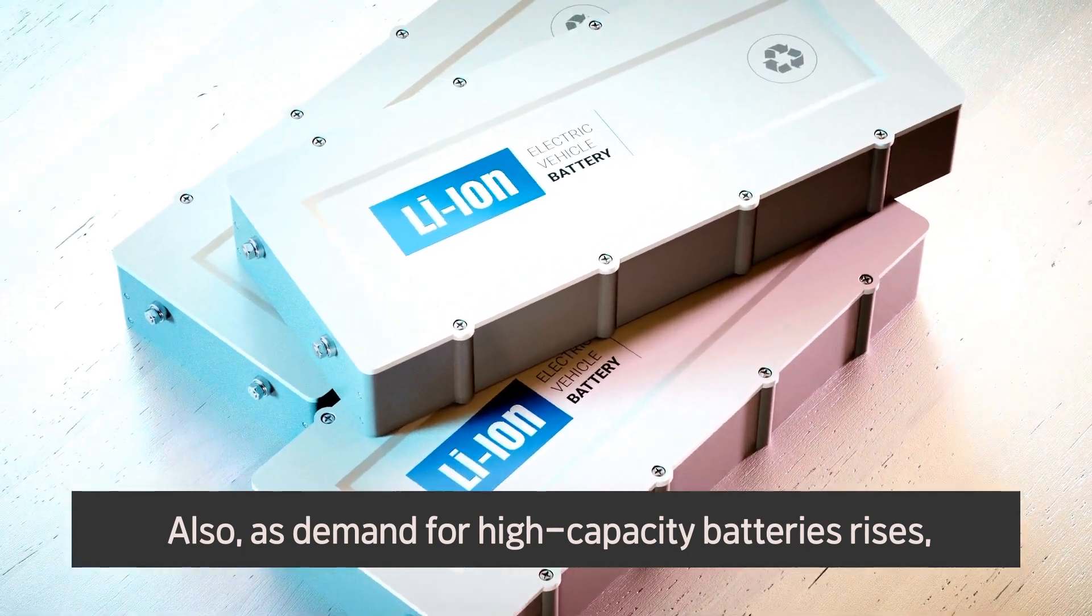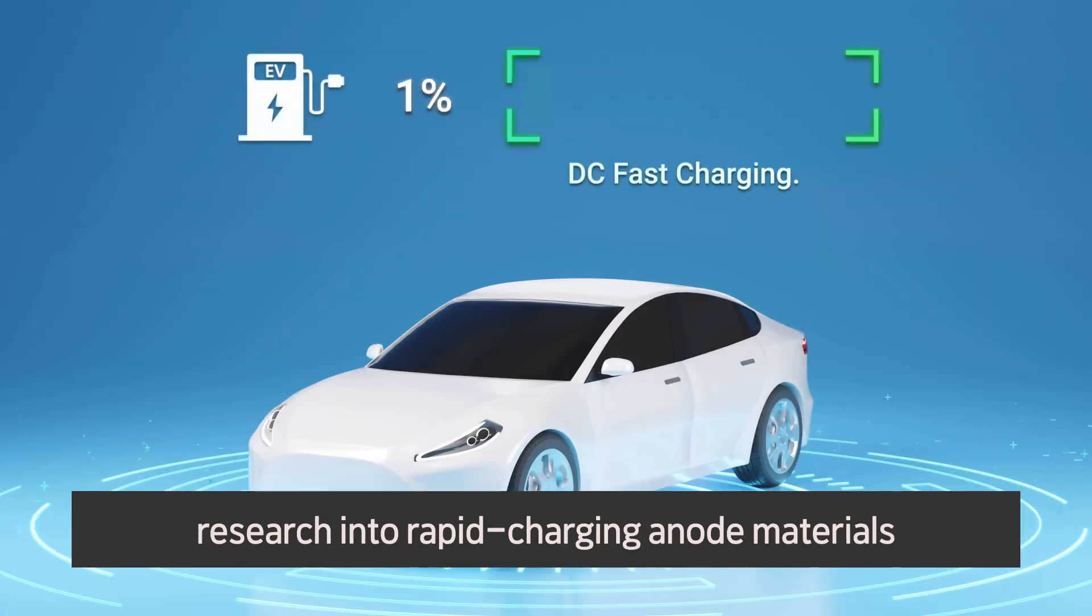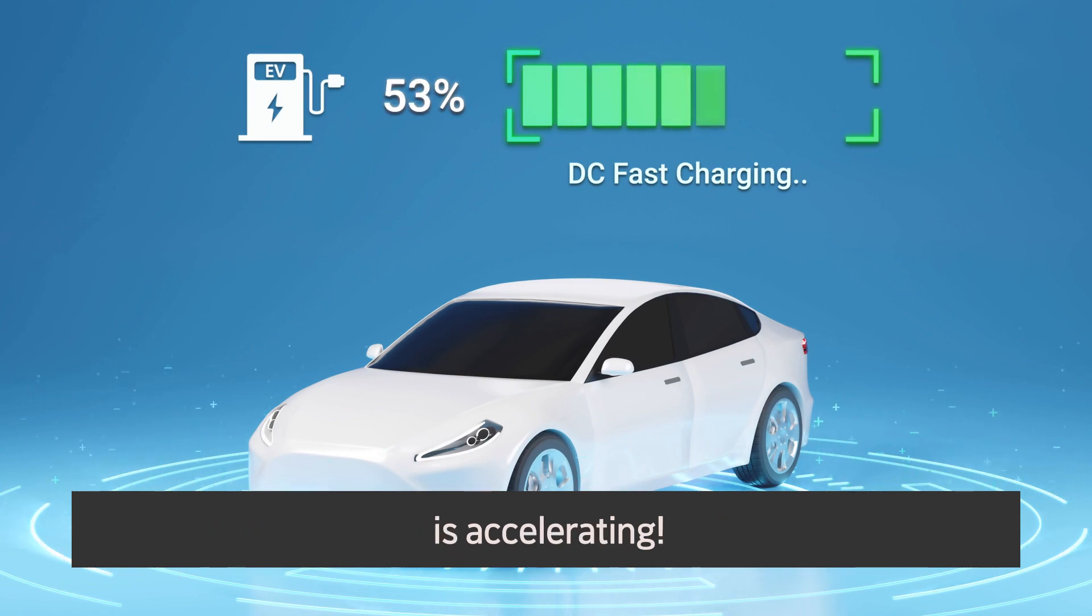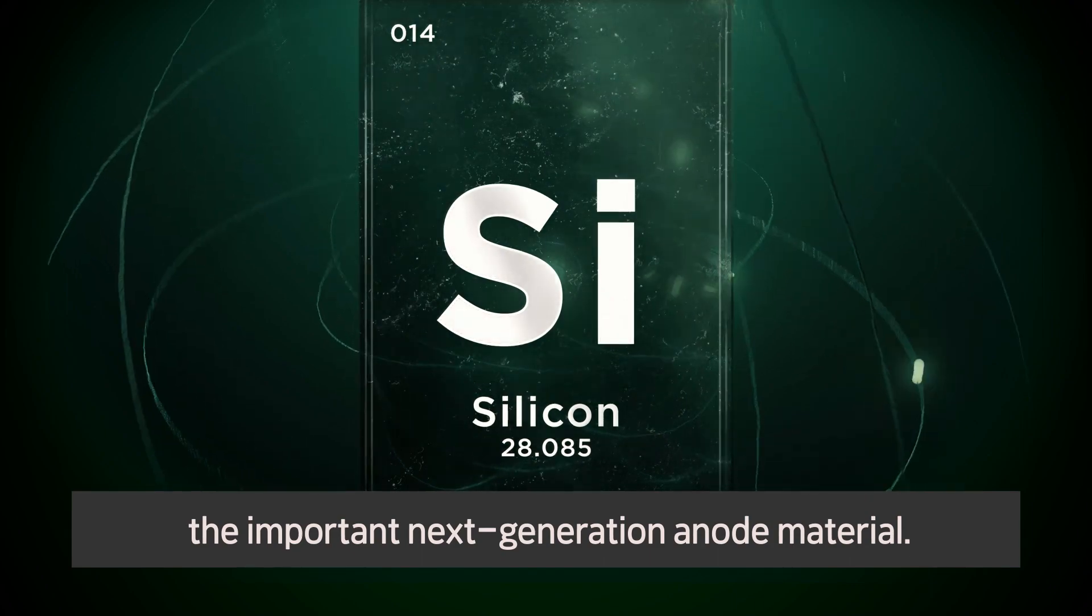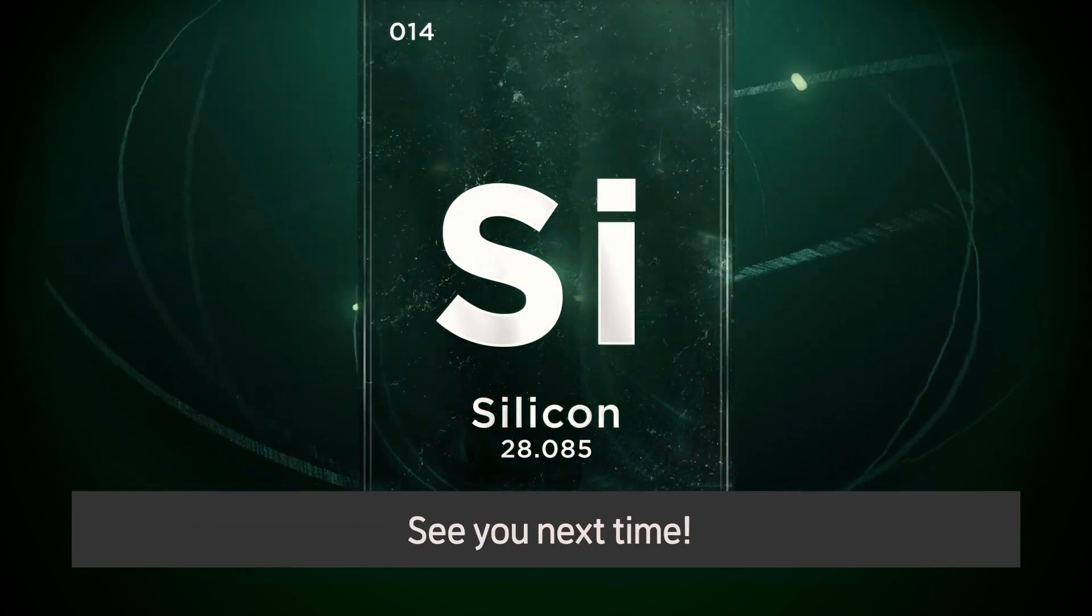Also, as demand for high-capacity batteries rises, research into rapid charging anode materials is accelerating. In our next episode, we'll look at silicon, the important next generation anode material. See you next time!